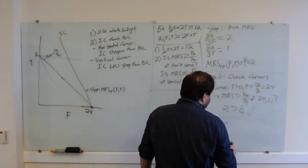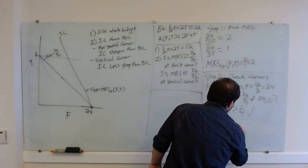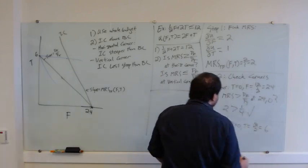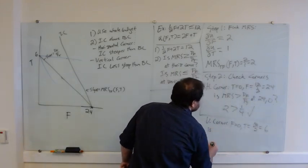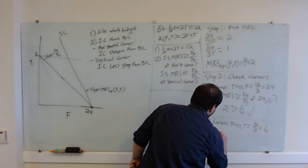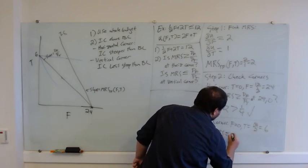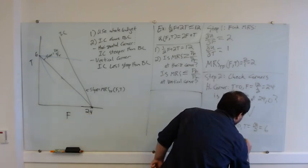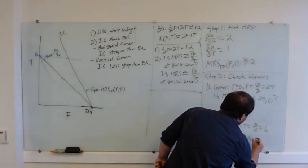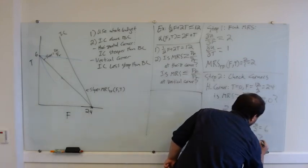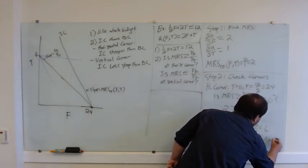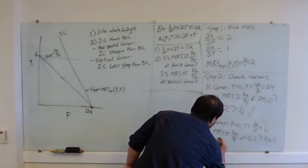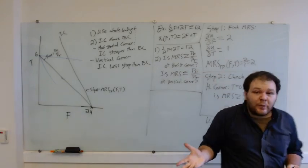If we didn't have a horizontal corner we could check the vertical corner. For the vertical corner, f equals zero and t equals 12 over 2, which equals 6. We ask: is the MRS less than or equal to our price ratio at (f=0, t=6)? In this case the answer is no — we do not have 2 less than or equal to one-quarter. So there is no vertical corner solution.